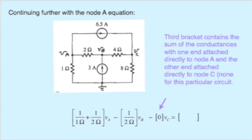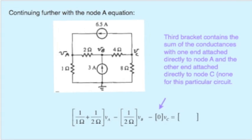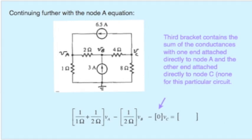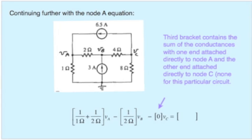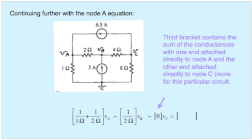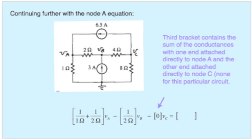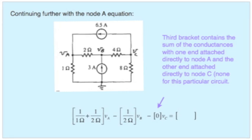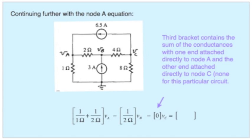Now let's consider the term in front of V sub C. This should contain all resistors that have one end on node A and one end on node C. There are none, so we enter a zero. Now one might say, well look at that 1 ohm resistor and the 8 ohm resistor. Don't those connect A and C? The 1 ohm resistor has one end on node A and the other end on the reference node, or the ground node, so it does not satisfy that criteria. Likewise for the 8 ohm, one end on the C node, one end on the ground node. It also does not belong in our equation at this point.